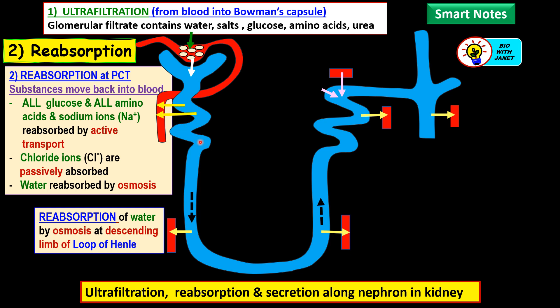For chloride ions, they are passively absorbed into the blood without the use of energy — probably by the process of diffusion. Water is reabsorbed by osmosis, also a form of passive transport. Once substances like glucose and amino acids enter the blood, the concentration of dissolved substances in the blood capillaries increases and becomes higher than the concentration of dissolved substances in the renal tubule. There is a concentration gradient, so water diffuses from the region of lower concentration in the renal tubule back into the blood by osmosis.